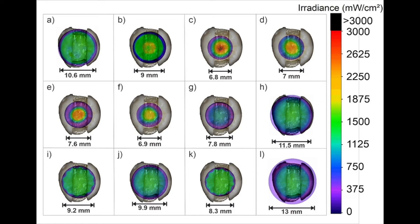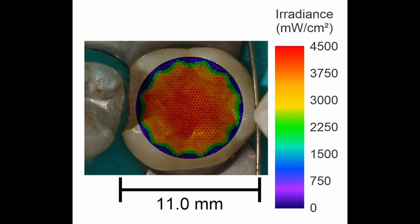Here you can see 12 curing lights with their light output superimposed over a molar tooth. As you can see, they're all quite different. Ideally, the light output should be uniform, such as in this image. But often we see outputs looking like this, where the light is obviously not very uniform.